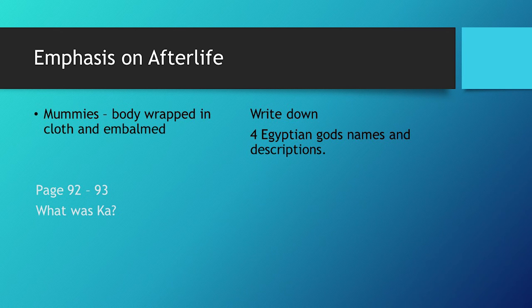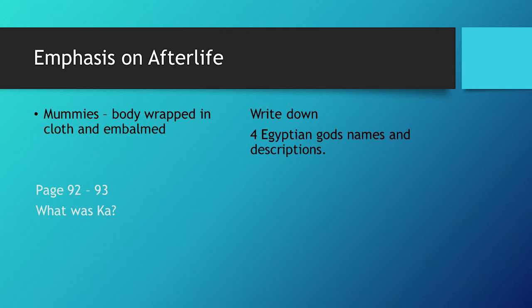So Egyptians have more of an emphasis on the afterlife than the Mesopotamians. The Mesopotamians, in some cases, have zero afterlife — or in other readings, a really dark afterlife, depending on whether you're Zoroastrian or not. In Egypt, they have a strong emphasis on the afterlife — they're wrapping bodies in mummies. Check out some of the Egyptian gods on pages 92 and 93 in your book, and look up what Ka is. It's also available online.